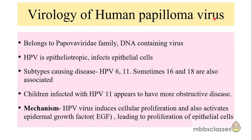Now let's see the virology of the human papilloma virus. The human papilloma virus belongs to the Papovaviridae family, which is a DNA-containing virus. It is epitheliotropic, meaning it has more liability to infect epithelial cells. The subtypes which cause the disease most commonly are subtype 6 and 11, but sometimes HPV 16 and 18 are also associated. Children infected with HPV 11 are found to have more obstructive type of disease, presenting with more obstructive symptoms than voice symptoms. The HPV induces cellular proliferation by activating the epithelial growth factor, resulting in proliferation of infected epithelial cells.